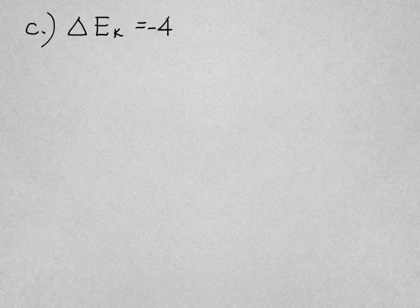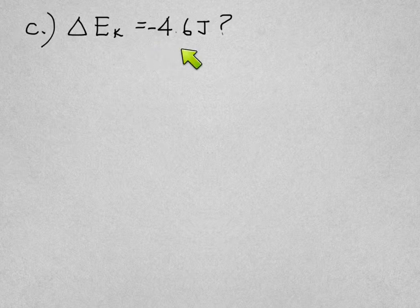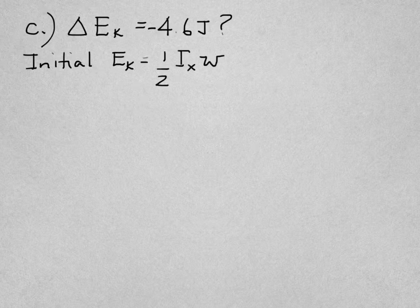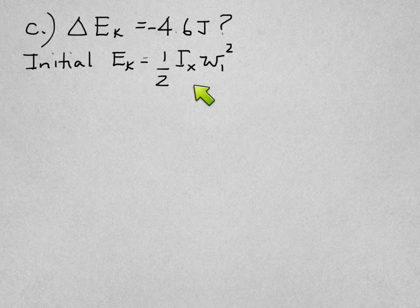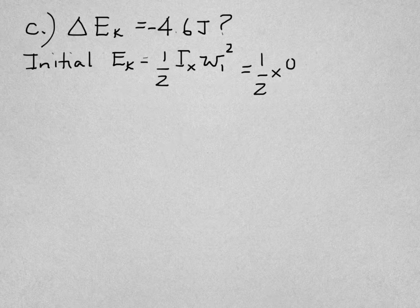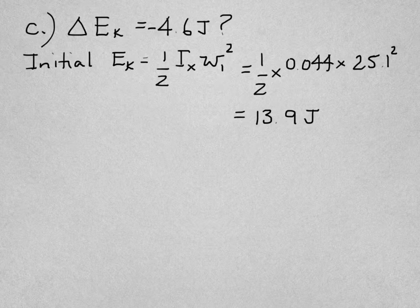Finally C says show that the total loss of kinetic energy is 4.6 joules. So a loss is a negative value, minus 4.6. The initial kinetic energy is half I ω² that's I of the initial disc X times the initial speed ω₁ squared. Put the numbers in and that comes to 13.9 joules.